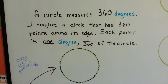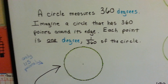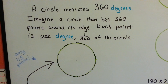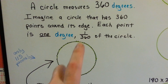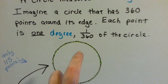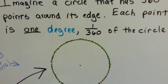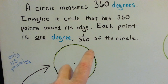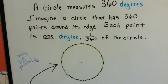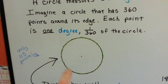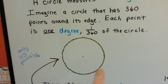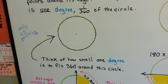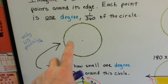A circle measures 360 degrees all the way around. Imagine a circle that has 360 points around its edge. Look at all these tiny little points. Each point is 1 degree, or 1/360th of the circle. Now this is only 115 points because my marker tip was so fat, so can you imagine how small 1 degree would be to fit around this circle?